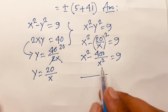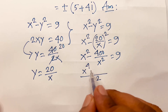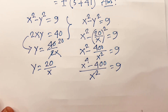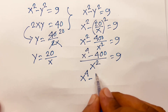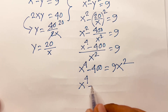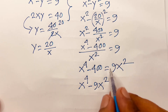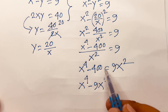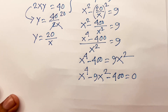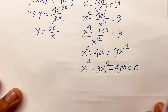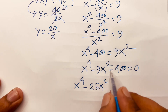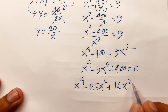Multiplying through by x²: x⁴ − 400 = 9x². Rearranging: x⁴ − 9x² − 400 = 0. Now I do middle-term factorization. I split −9x² as −25x² + 16x²: x⁴ − 25x² + 16x² − 400 = 0. Note that 25 × 16 = 400 and −25 + 16 = −9.